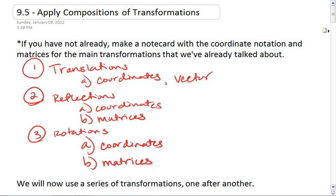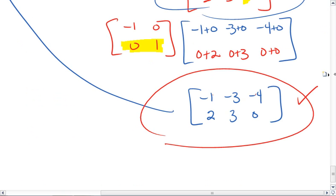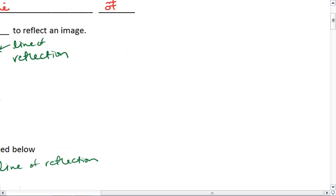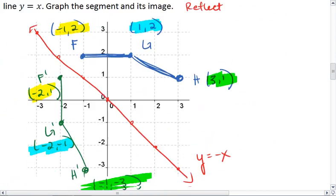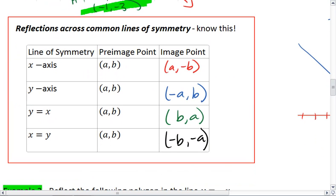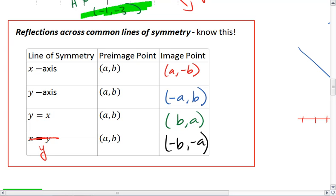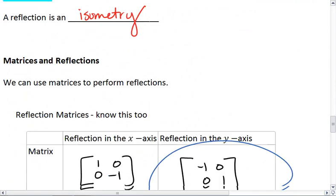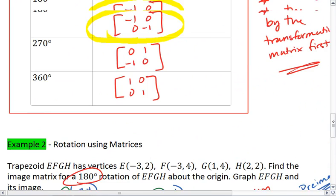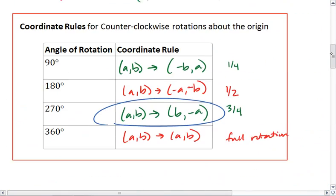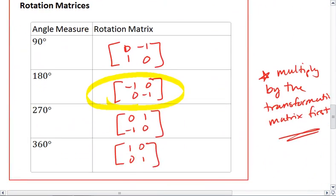Those are already in your notes, so if you were to go back, here we go. You'll have those boxes that have the common coordinate notations for reflections and the matrices. And then also similarly for rotations, you should have your coordinate notation and your matrices.